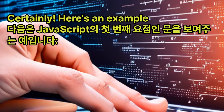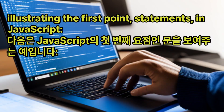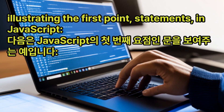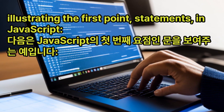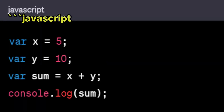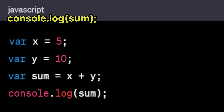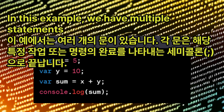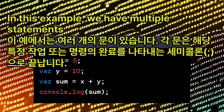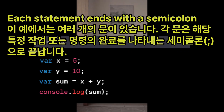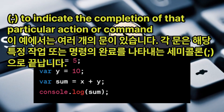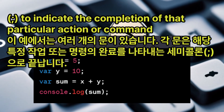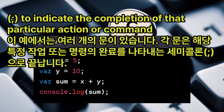Here's an example illustrating the first point, statements, in JavaScript: var x = 5; var y = 10; var sum = x + y; console.log(sum). In this example, we have multiple statements. Each statement ends with a semicolon to indicate the completion of that particular action or command.